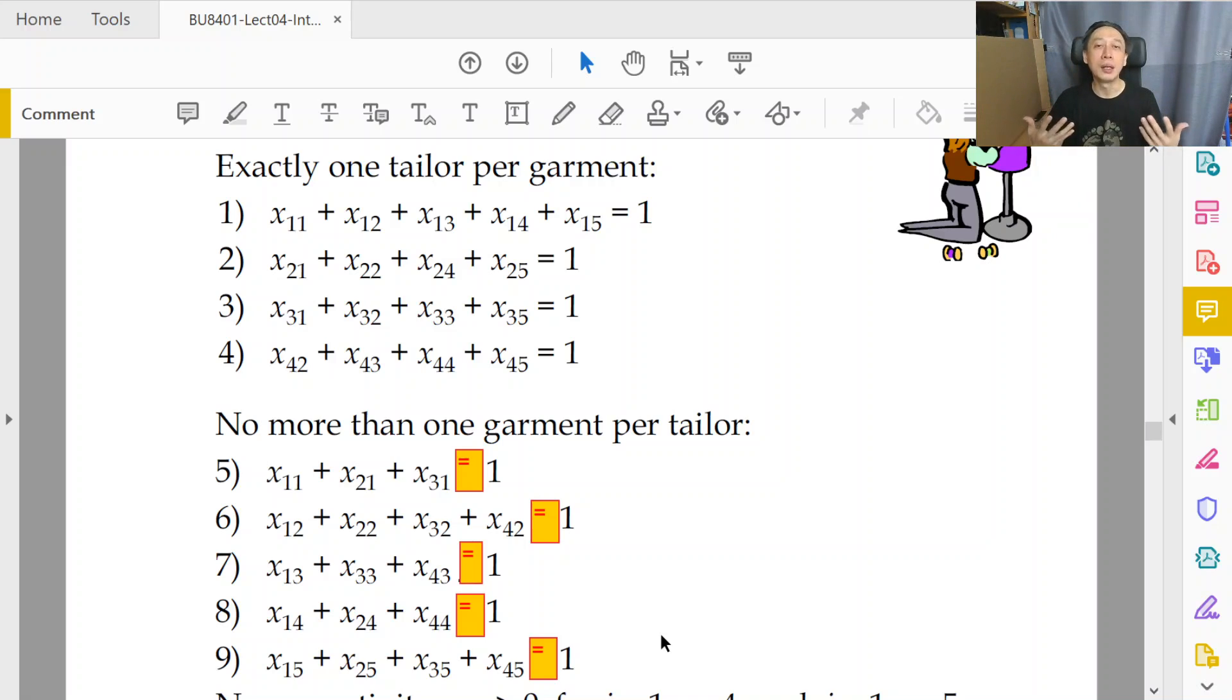Because nobody can beat mathematical fundamental principles. So by pigeonhole principle, it is impossible to assign four garments to five tailors. But you're insisting solver to be able to do that, and solver cannot beat the underlying logic. So solver is going to come back by saying, impossible to solve.